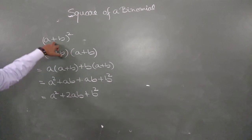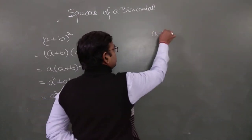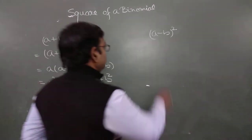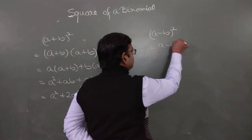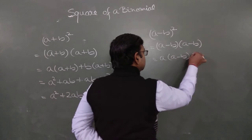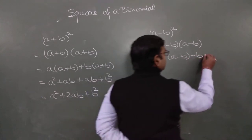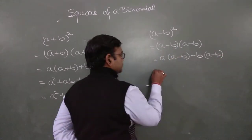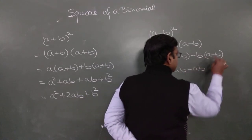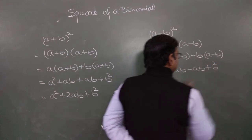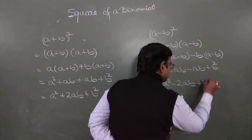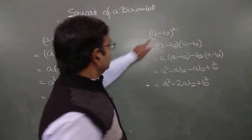Now if there is a minus sign, then (a - b) whole square. We can write (a - b) into (a - b): a times a is a squared, a times negative b is negative ab, negative b times a is negative ab, and negative b times negative b is positive b squared. So we get a squared minus 2ab plus b squared. This is the second identity — used when there is a minus sign in between.